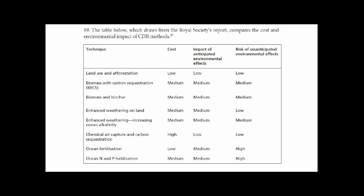Land use and afforestation: cost is low, anticipated impact is low, and risk is low. Biomass with carbon sequestration: cost is medium, impact is medium, and risk of unanticipated environmental effects is medium. Enhanced weathering on land: costs are medium, impacts are medium, and the risks are low.